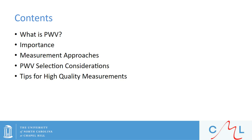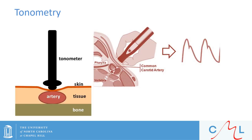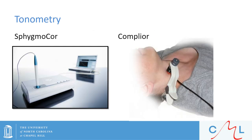We've established that pulse wave velocity is an important measure of arterial stiffness, so now let's discuss measurement approaches. There are several ways to measure pulse wave velocity. These include tonometry, oscillometry, ultrasound, electrocardiogram, photoplethysmography, and transcranial Doppler, among others. Tonometry has been the most widely used method, consisting of applying a force over the center of a superficial artery against an underlying bone. Here are two example devices: on the left, the AtCor SphygmoCor, and on the right, the Complior with a tonometer held in place by a neck brace. With oscillometry, we use blood pressure cuffs to detect the pressure waves.